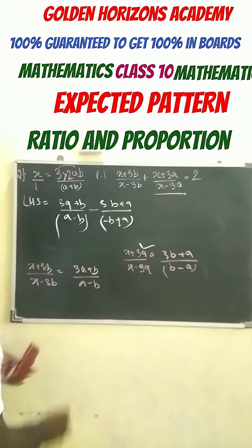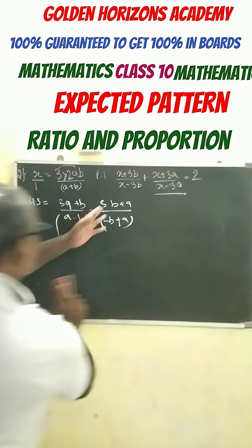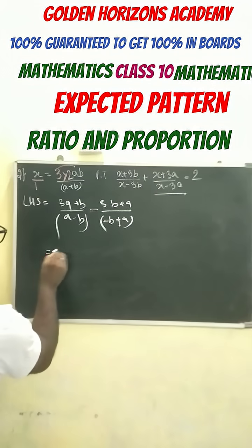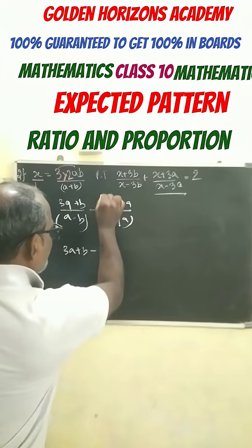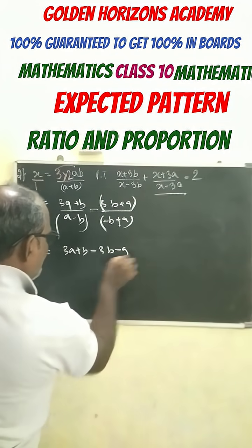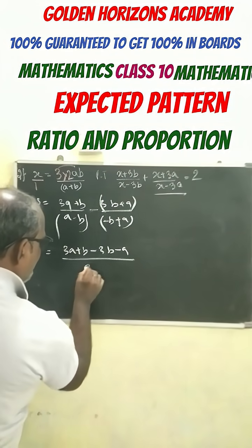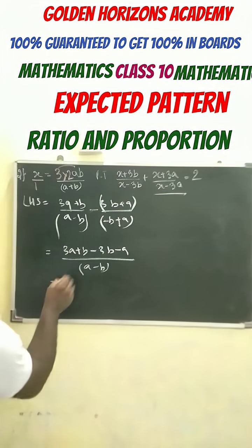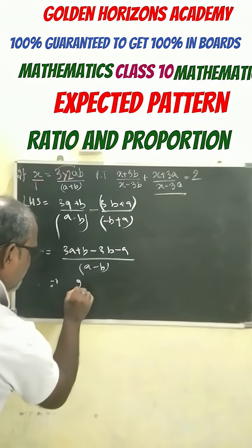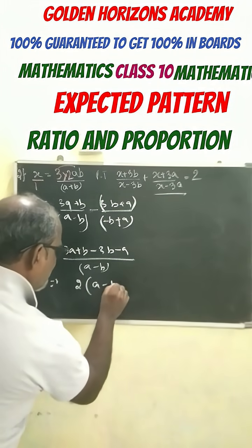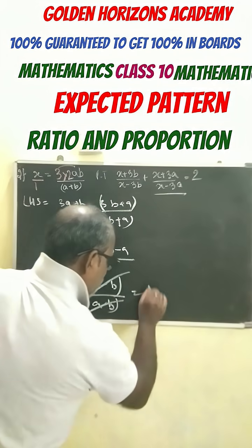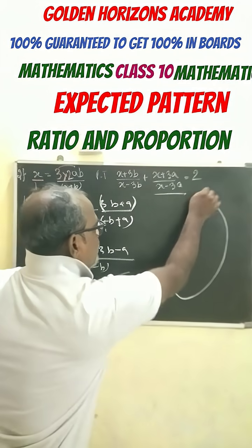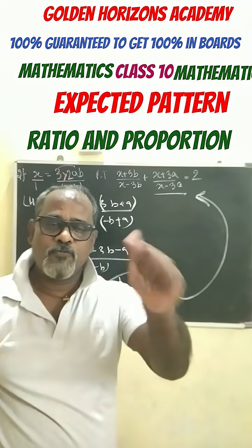Now the denominator is the same. We can see here. So this can be written as 3a plus b minus 3b minus a by a minus b. 3a minus a, that is 2 common, a minus b by a minus b equals RHS. So be careful following this example.